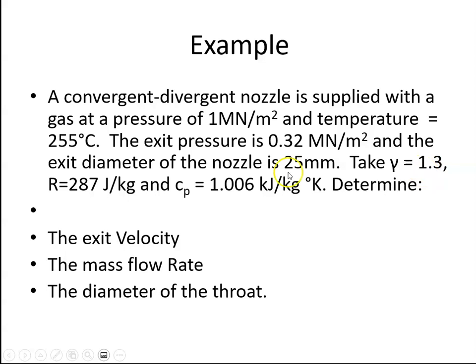We are to assume that gamma is 1.3, the universal gas constant R is 287, and the specific heat capacity at constant pressure CP is 1.006 kJ per kilogram degrees Kelvin. We're asked to determine the exit velocity, the mass flow rate, and the diameter of the throat.